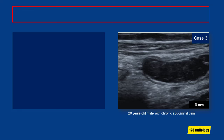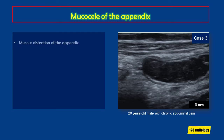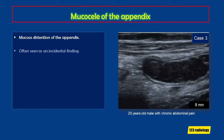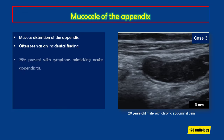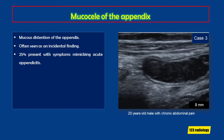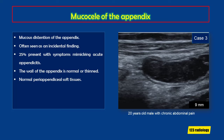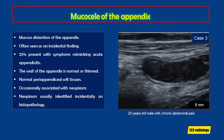This is a 20-year-old male with chronic abdominal pain. The appendix is enlarged at about 9 mm with its lumen filled with fluid. The appendiceal wall appears normal and the peri-appendiceal tissues are also normal — this represents mucocele of the appendix, which is mucus distension of the appendix. It is most often seen as an incidental finding, but 25% present with symptoms mimicking acute appendicitis. There is no inflammation of surrounding tissues, though it is occasionally associated with a neoplasm, usually identified incidentally on histopathology.